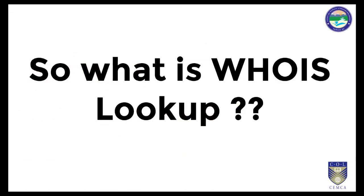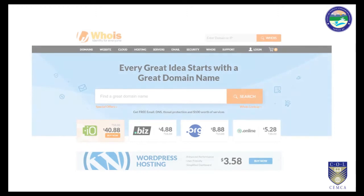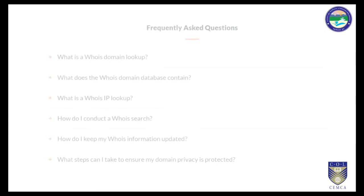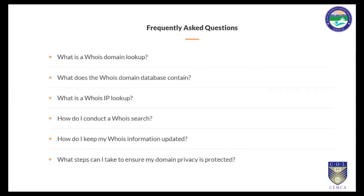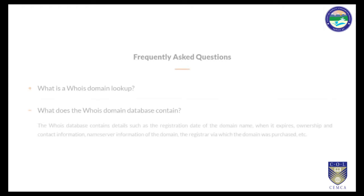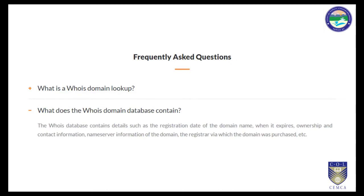A WHOIS domain lookup allows you to trace the ownership and tenure of a domain name. It is similar to how all houses are registered with a governing authority — all domain name registries maintain a record of information about how every domain name was purchased and who owns it, along with the date till which it has been purchased. The WHOIS database contains details such as the registration date of the domain name, when it expires, ownership and contact information, name server information, and the domain registrar through whom the domain was purchased.